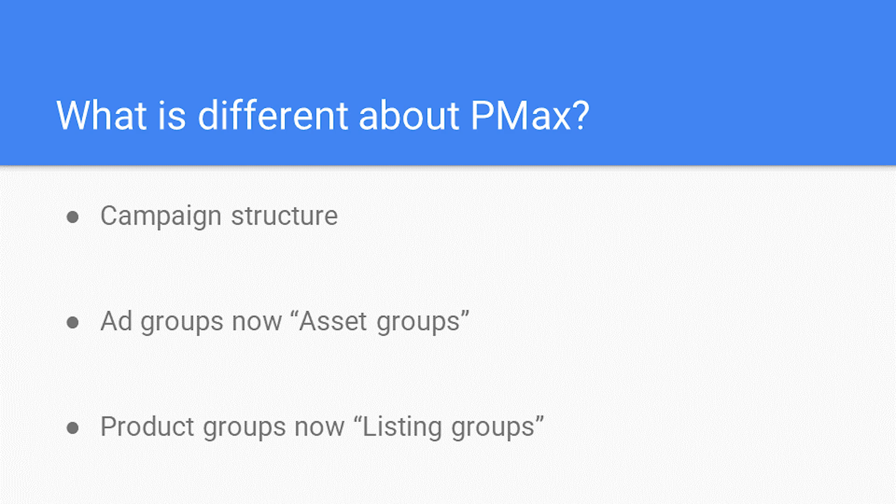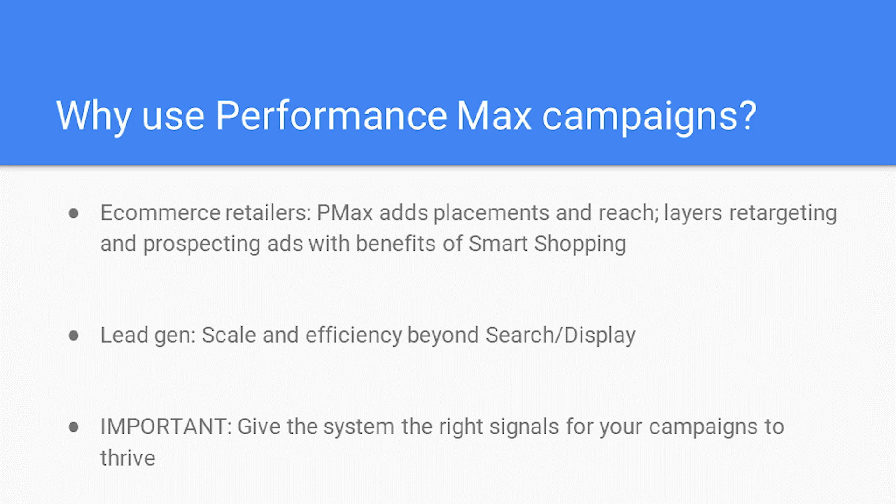Why would you use a Performance Max campaign? For e-commerce retailers, we've seen success with smart shopping, and Pmax takes it to the next level by adding on some additional placements and reach. This acts as a smart shopping campaign with retargeting and even prospecting display ads layered on top of it. You can also see this work really well for lead generation, where Performance Max can deliver scale and efficiency that would be pretty hard to top through search and display alone. At the same time, it's important to feed the system the correct signals so you don't end up with poor quality leads.